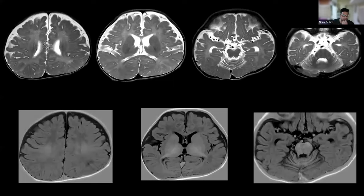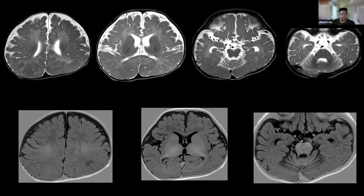MRI at six and a half months shows slightly delayed myelination on T2 sequences — paracentral white matter should be dark but is slightly hyperintense, splenium is not completely dark. Some delayed myelination in the anterior limbs. Slight prominence of subarachnoid spaces on frontal and lateral convexities. Some tortuosity of the intracranial arteries is noted — not very significant but not normal. Cerebellum shows some degree of volume loss.